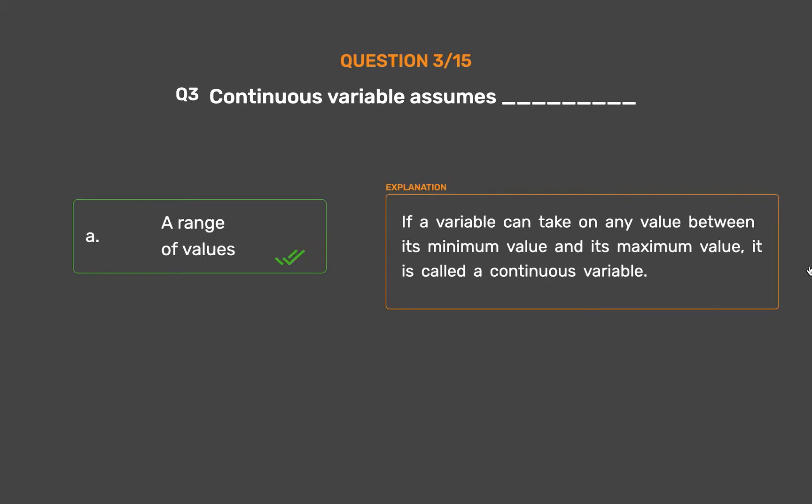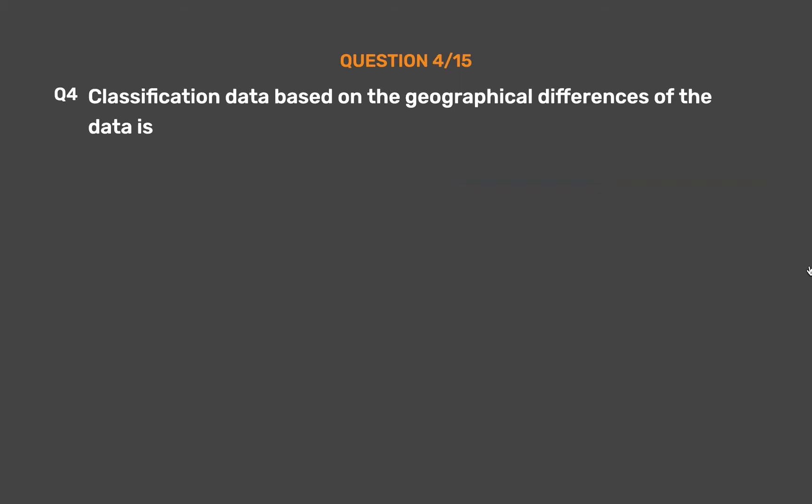If a variable can take on any value between its minimum value and its maximum value, it is called a continuous variable.